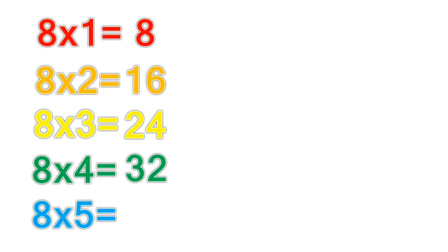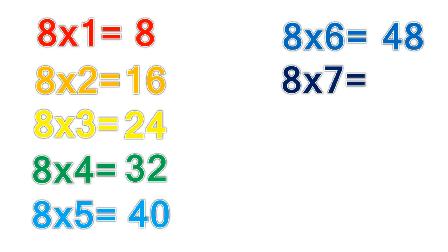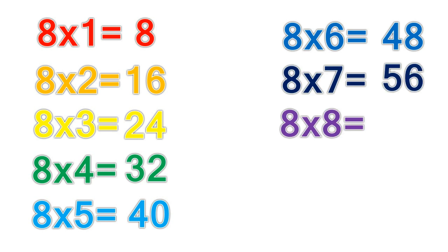8 times 5 equals 40. 8 times 6 equals 48. 8 times 7 equals 56. 8 times 8 equals 64.